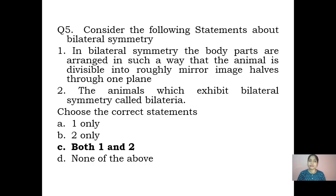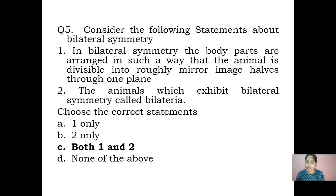Last question: consider the following statements about bilateral symmetry and choose the correct statement. Statement one: in bilateral symmetry, the body parts are arranged such that the animal is divisible into roughly mirror image halves through one plane — only through that one plane do we get two equal halves, as in human beings. Statement two: animals which exhibit bilateral symmetry are called bilateria — also correct. Therefore the obvious answer is both statements one and two are correct. I hope this video lesson was of use to you — have a great day, thank you for your patience.